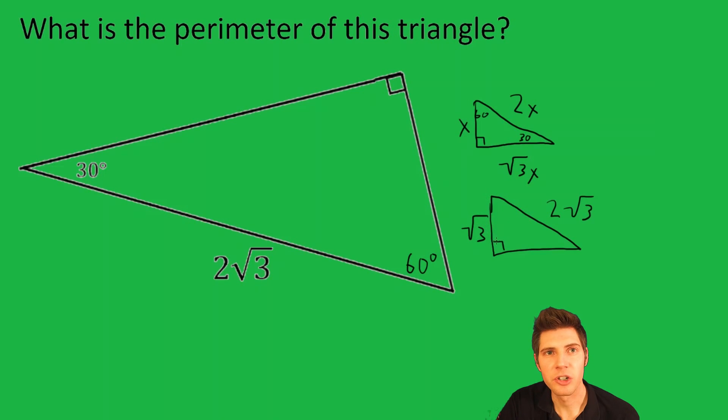Then you get from the shorter leg to the longer leg by multiplying by square root of 3. So it's going to be √3 times √3, which is equal to 3. So now we can just fill in our missing pieces. Opposite the 30, this is √3.